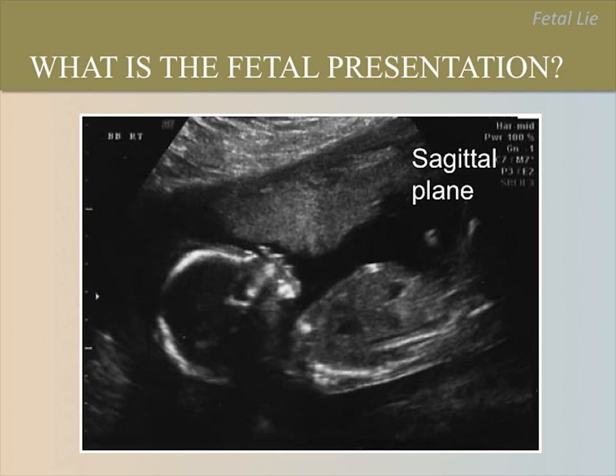What is the fetal lie and presentation in this image and why? Please pause the video to encourage responses. The answer is that the fetus is in the breech presentation and has a longitudinal lie. The fetal buttocks are closest to the cervix, which is to the right of the image, and the fetal head is toward the mother's head, which is to the left of the image.